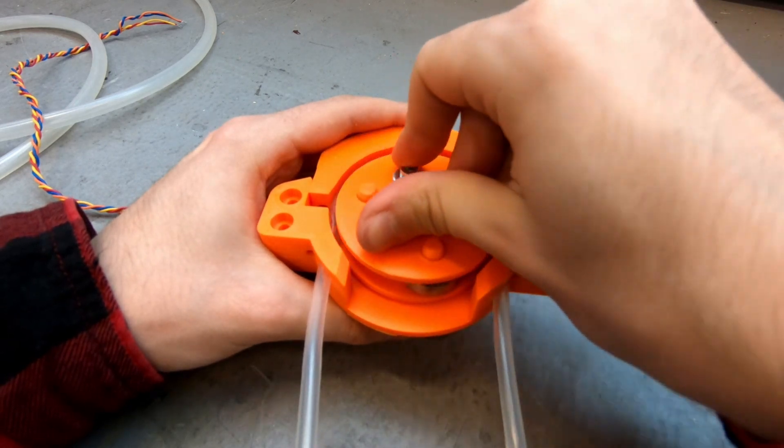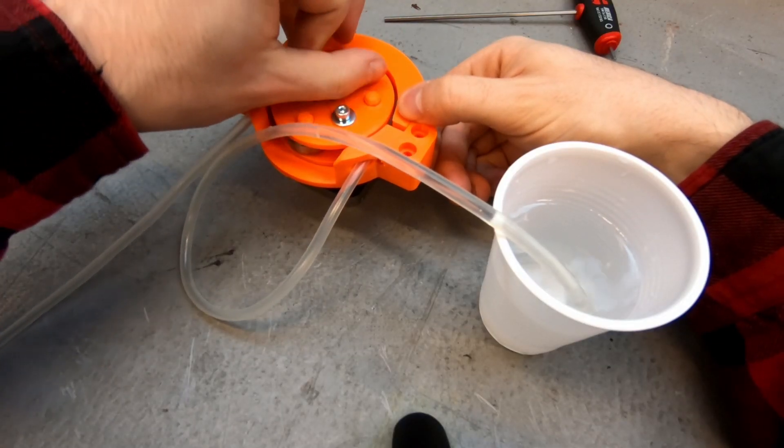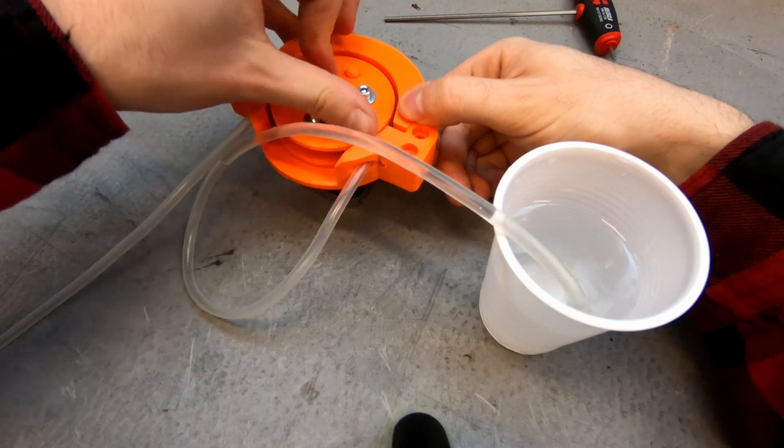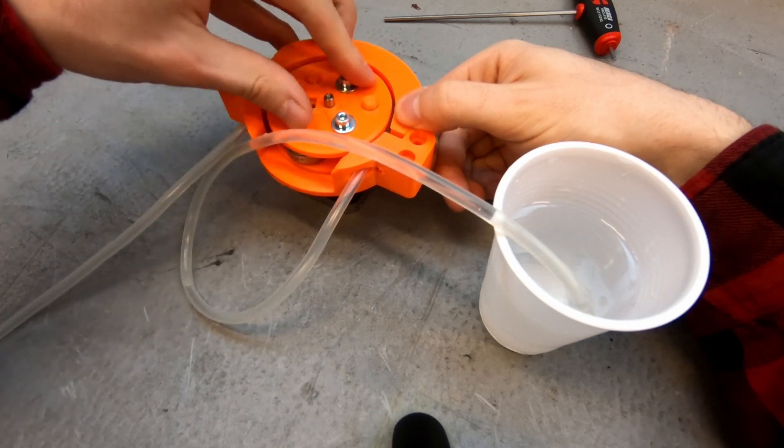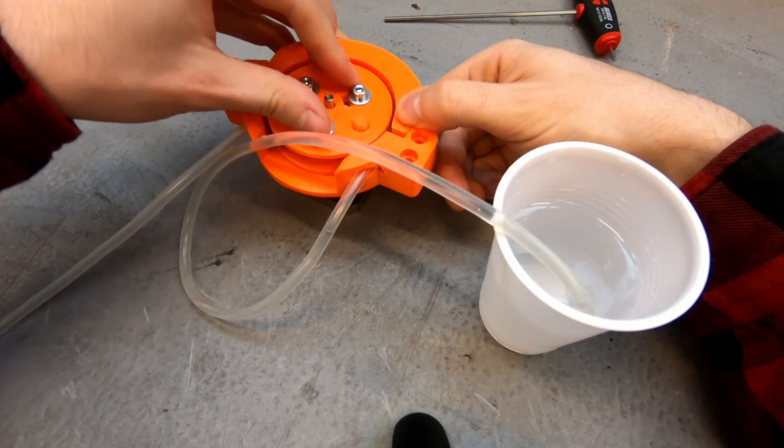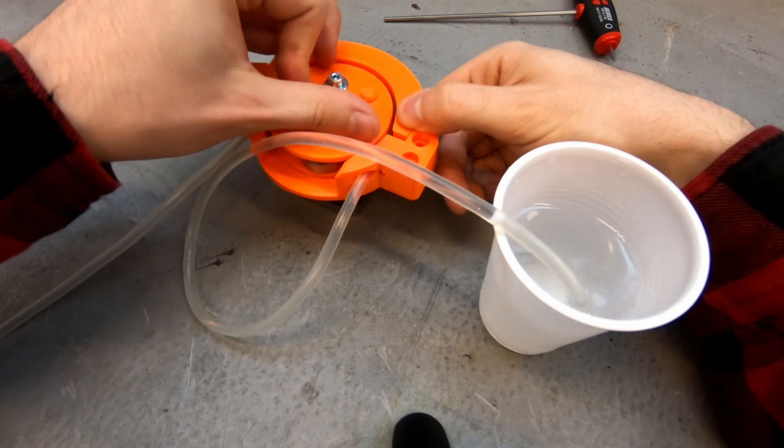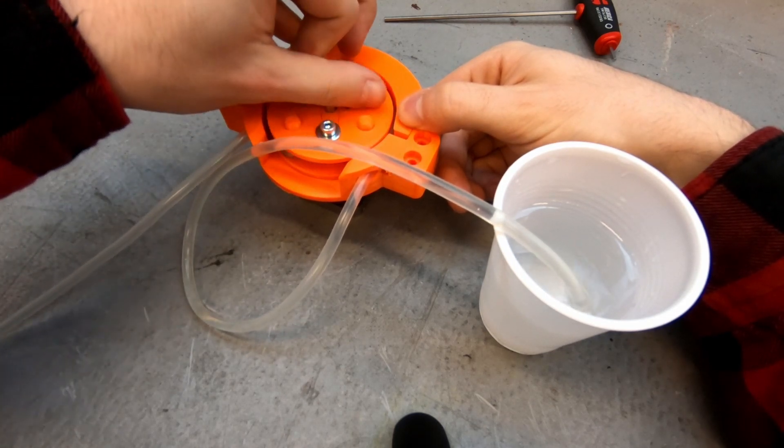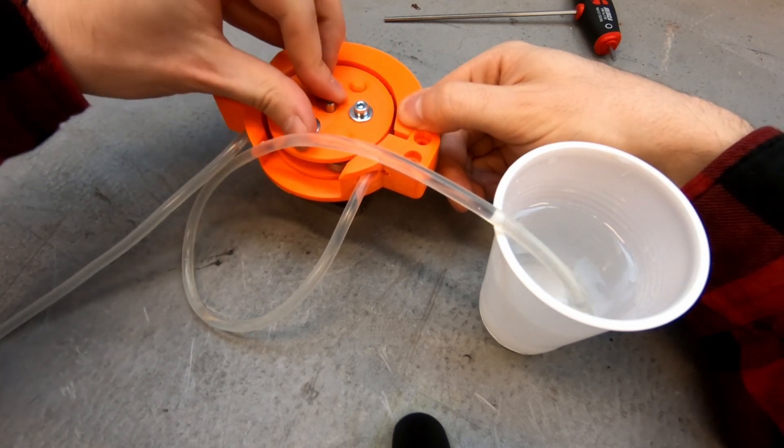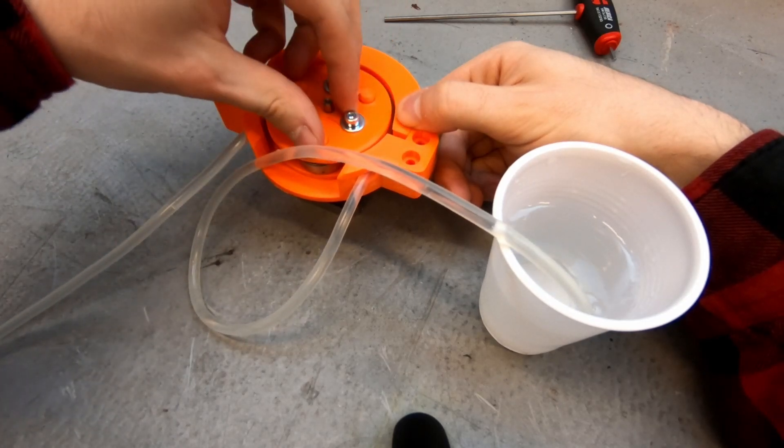Now peristaltic pumps are excellent because they are so simple and as you can see they are self-priming. The liquid will get pulled through the pump even if there is no water or any liquid in the tube to begin with. So even if there is only air, the water will flow through.